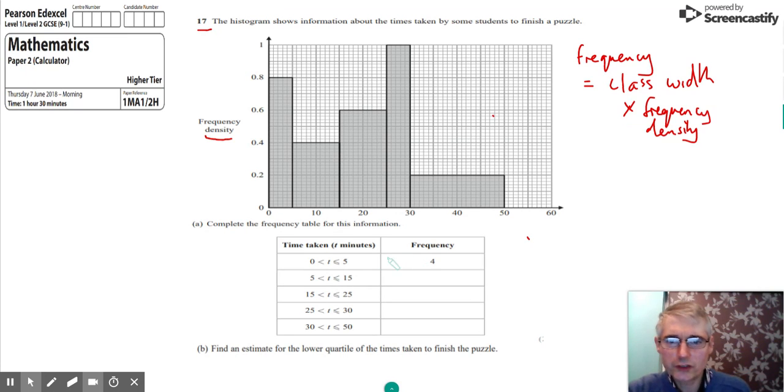So we can see how this first value's been obtained, frequency of 4. What we've done is we've multiplied the frequency density, which is 0.8, by the width here, which is 5. So if I multiply 0.8 by 5, then we do get 4, the value on the frequency column. So we have to go through this process to complete this frequency table.